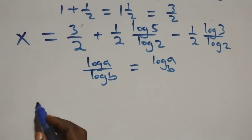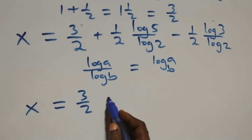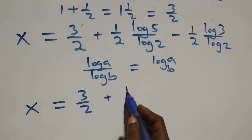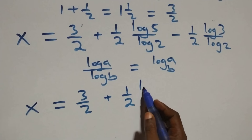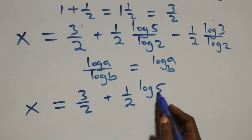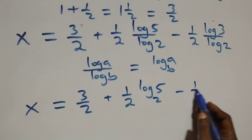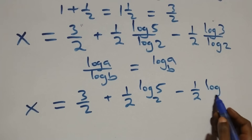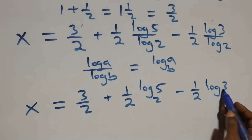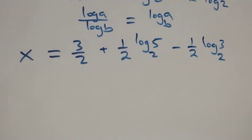Then here, we apply the change of base rule: when we have log A over log B, this is the same thing as log A to base B. Then what we have becomes x equals to 3 over 2 plus 1 over 2 log₂5 minus 1 over 2 log₂3.